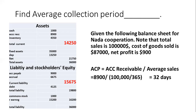Let's look at the average collection period — how many days it takes to collect money. The average collection period is accounts receivable divided by average daily sales. Average sales equals total sales of $100,000 divided by 365. With accounts receivable at $8,900, it will take approximately 32 days — almost a month — to collect money from outside.